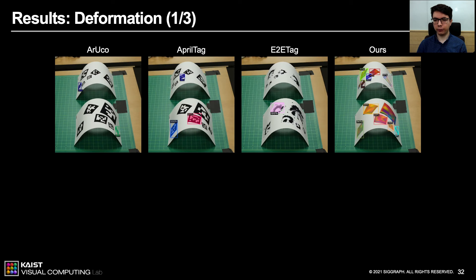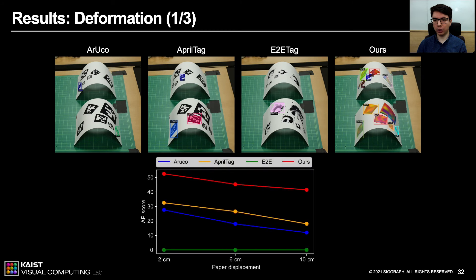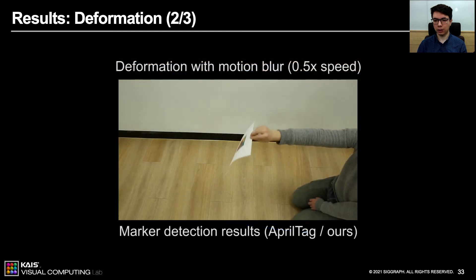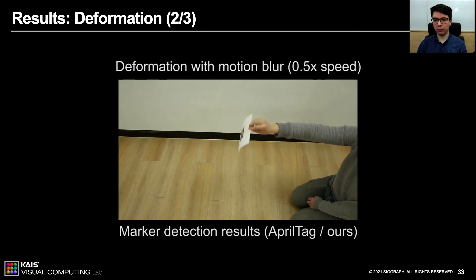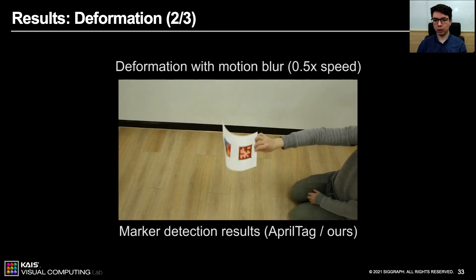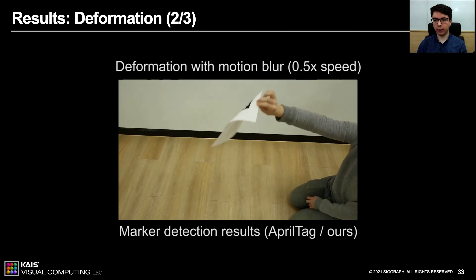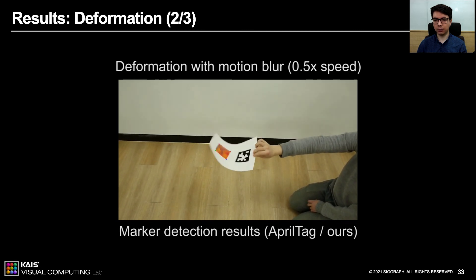To evaluate the performance of these four methods on deformed surfaces, we designed a controlled environment for a marker deformation experiment. We fixed one side of the paper on a flat table and moved the other side to bend the sheet and create a consistent saddle shape. The results validate that our markers outperform the other methods in detecting the identification of deformed markers. Here is a qualitative comparison of AprilTag and our markers on deformation with motion blur. AprilTag fails to provide consistent detection results, while our system successfully detects the majority of the frames.